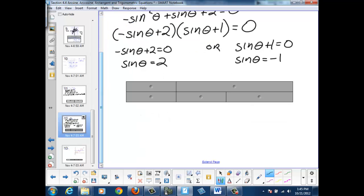Now we know that the graph of the sine theta only reaches from negative 1 to 1, the range. So sine theta will never be equal to 2.